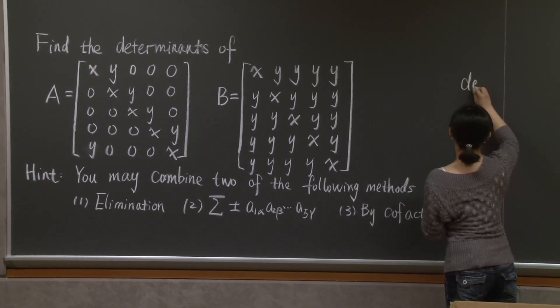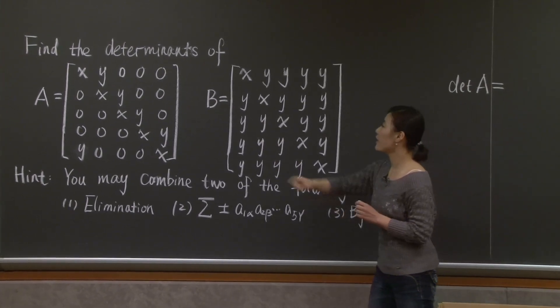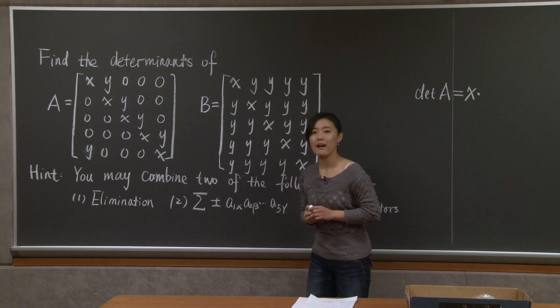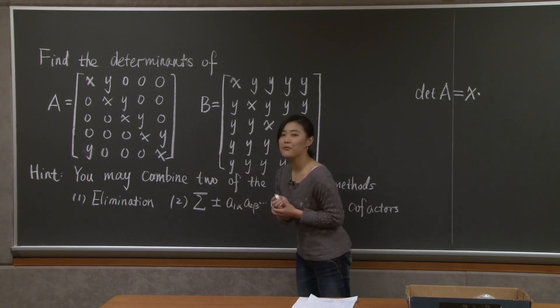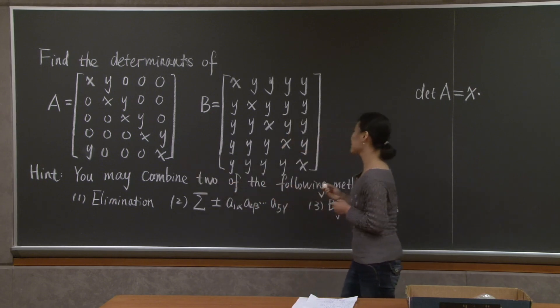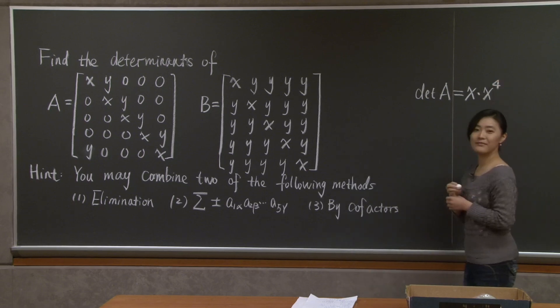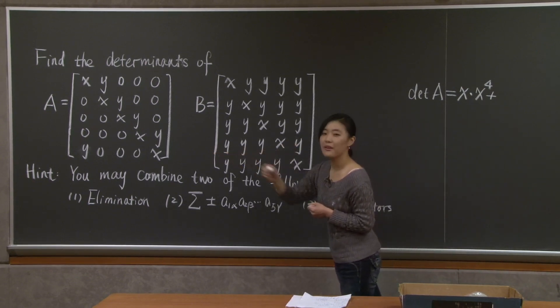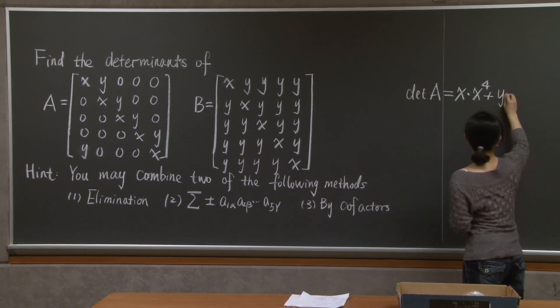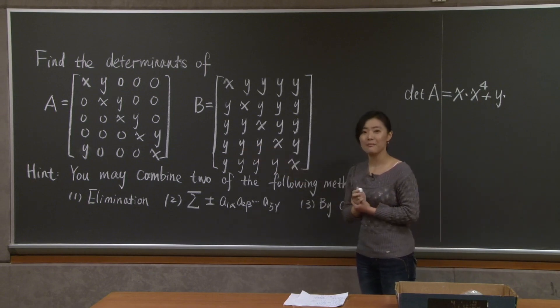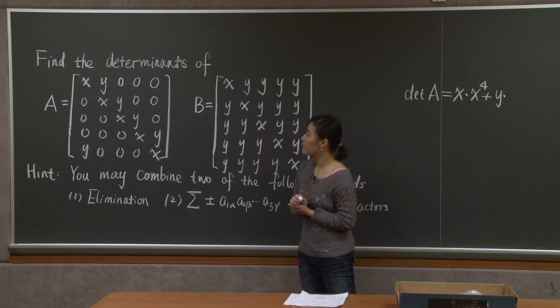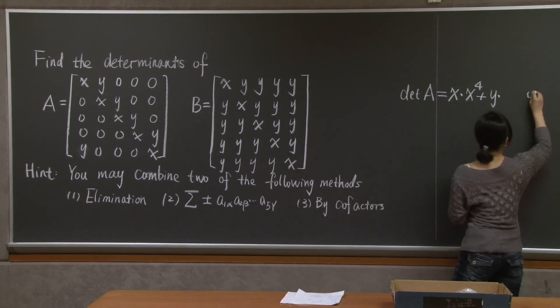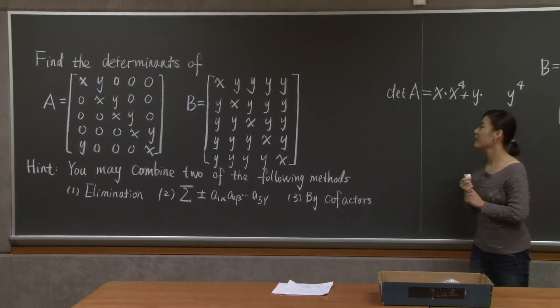So determinant of A is equal to the 1, 1 entry of A, which is x, times the cofactor of that spot, which is the determinant of the leftover 4 by 4 matrix. And it's upper triangular, so its determinant is simply given by x to the power of 4, plus the only other non-zero entry in that column is the y at the very bottom. So you put y here, and you multiply y by the cofactor of that spot, which is the determinant of the leftover 4 by 4 matrix again. In this case, it's lower triangular, and its determinant is y to the power of 4. So I have a y to the power of 4 here, but not quite.